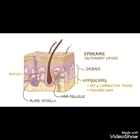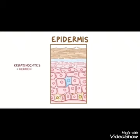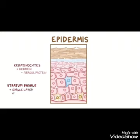Under the epidermis, the lowest layer is stratum basale. In stratum basale, there is continuous production of keratinocytes and melanocytes. These are cuboidal-shaped stem cells which continue to divide to form keratinocytes. These keratinocytes contain a protein known as keratin, that's why these cells are called keratinocytes.